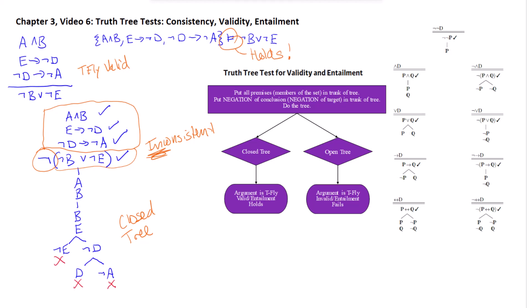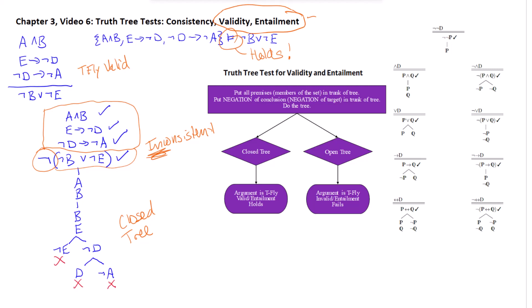That means this is a truth-functionally valid argument and the entailment holds. So all you need to remember when doing validity/entailment tests is to take the negation of the target or conclusion. Hope that helps.